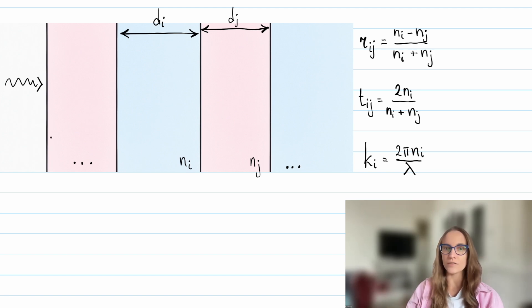There, we used a different approach based on summing up infinite internal reflections. It helps to better understand what is really going on. The advantage of the transfer matrix method is that it can be easily generalized to any number of layers.